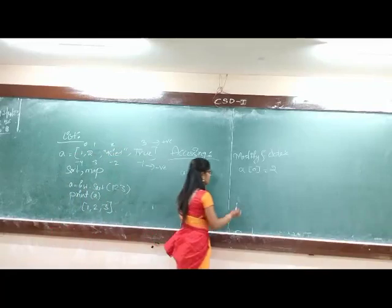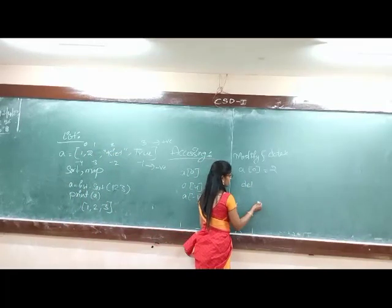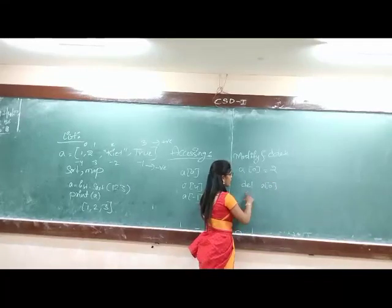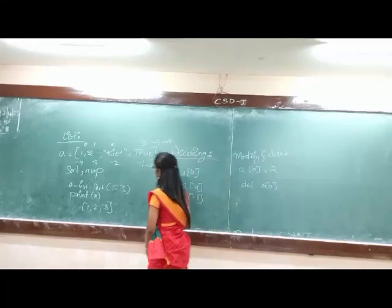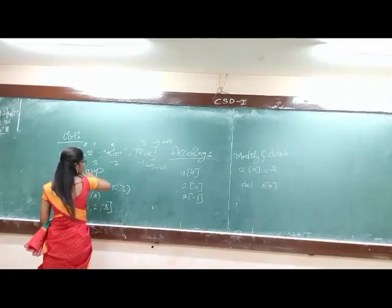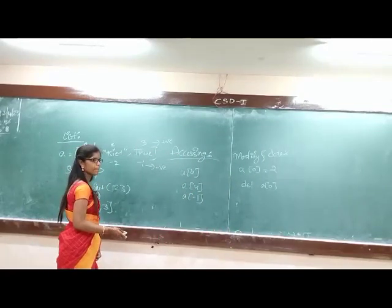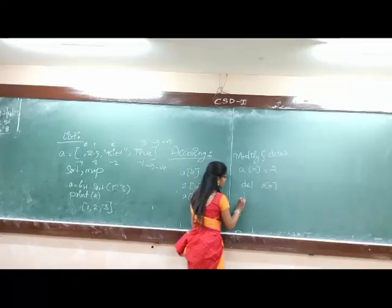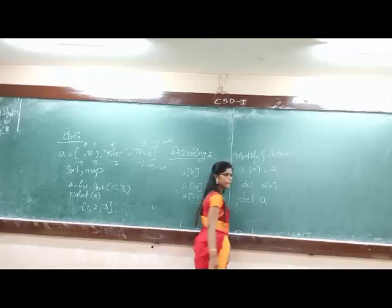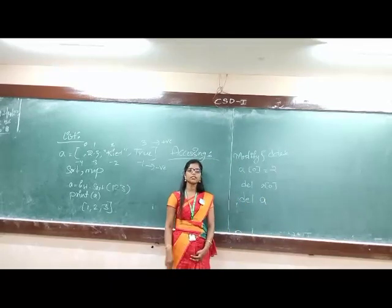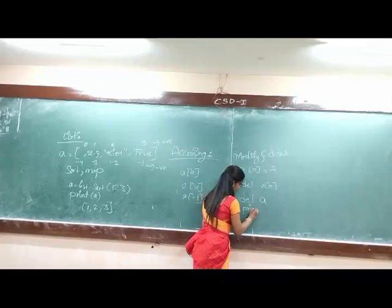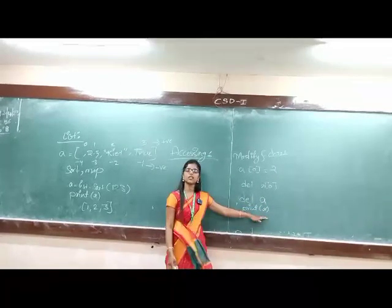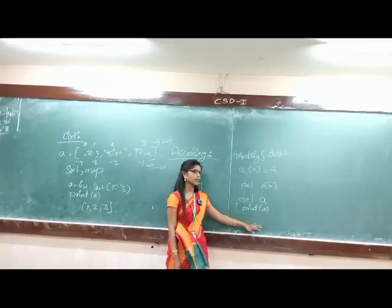And deletion. So I can delete A of zero. A of zero to delete. I am going to delete all list. So now what happens? I want to print a list. A is not defined. Why? Because that A is deleted. So we get name error.